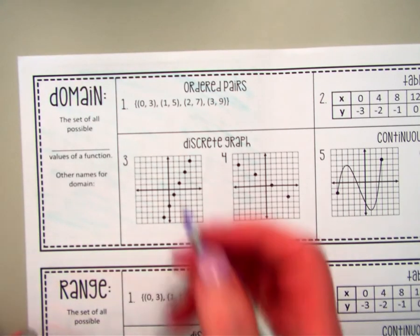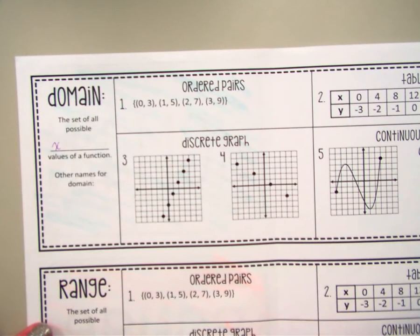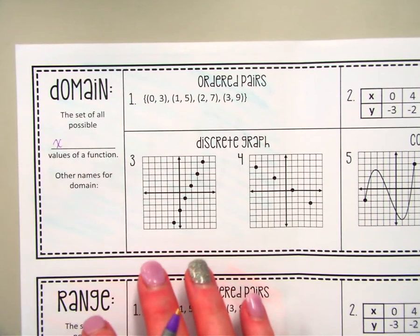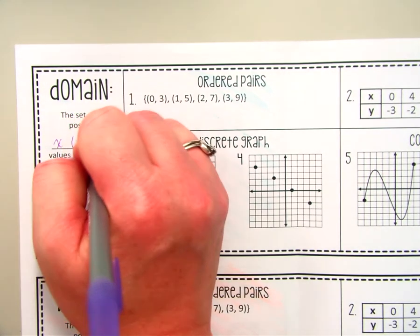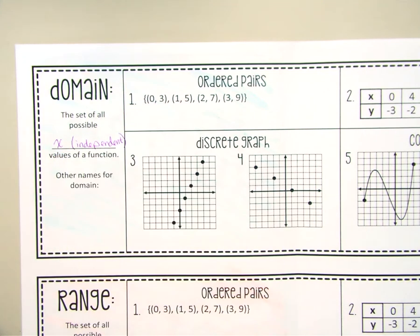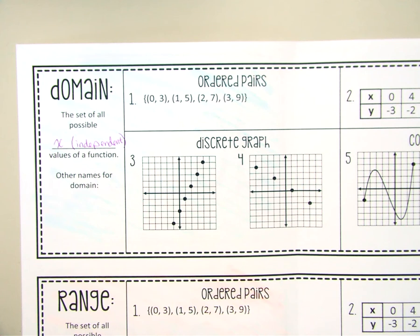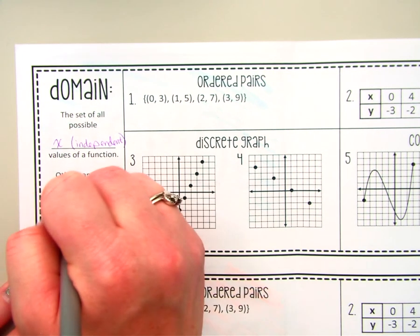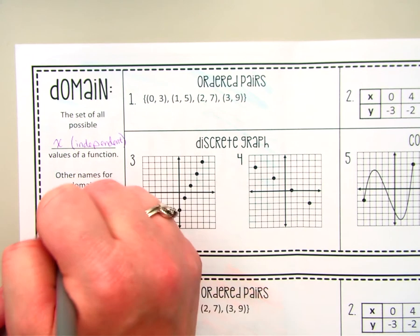A domain is the set of all possible x values of a function, but it is also known as our independent variable. Your domain is your independent variable, which comes up more as we get into word problems. Independent variables are ones that you can't really control — for example, in word problems your independent variable is often time, because time moves on whether you want it to or not. So your domain is all possible x values, also known as your independent values.